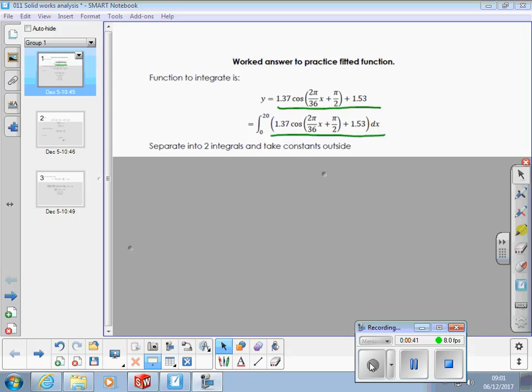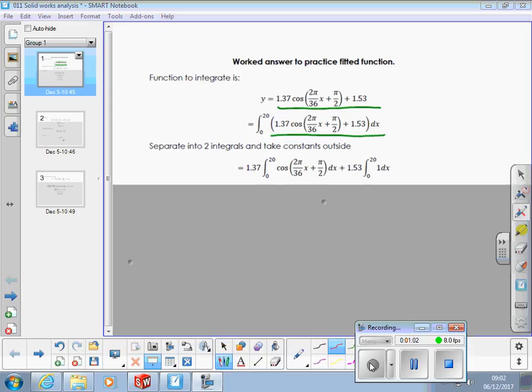So, the first thing to do is separate the two integrals and take any constants outside, because if we've got integrals of a function added together, we just integrate them separately and add them together. We can separate off the 1.53 times, and we just put a 1 times dx in there, and we've taken that constant out. We can deal with that separately at the end.